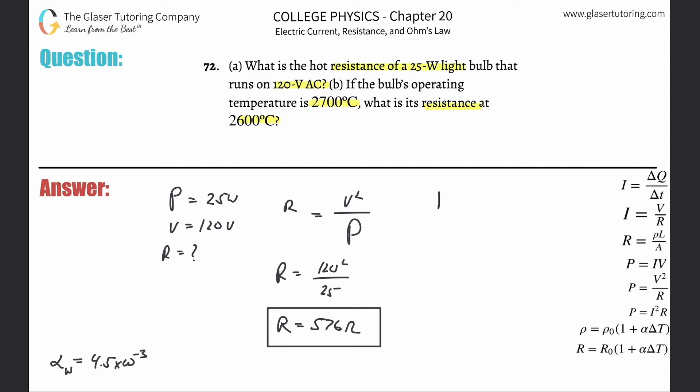So we have our formula that I like to call this RF will equal RI times one plus the alpha value multiplied by the change in temperature. It just depends on how you phrase it.